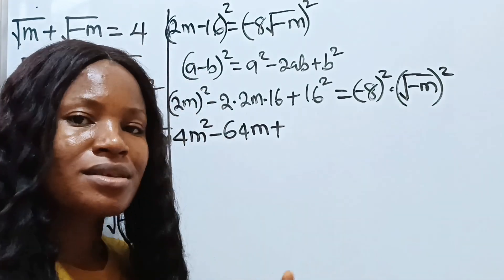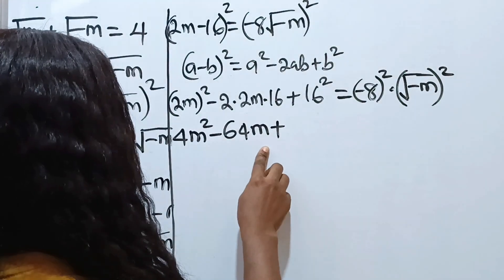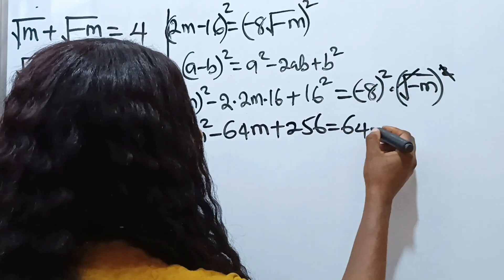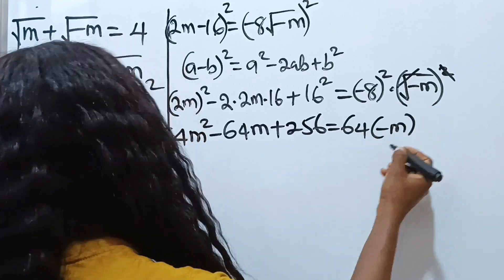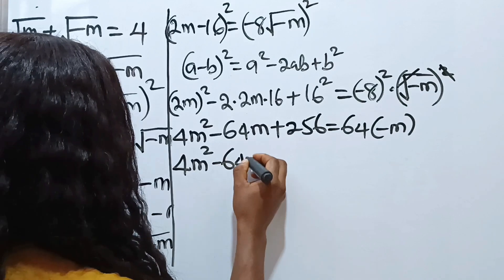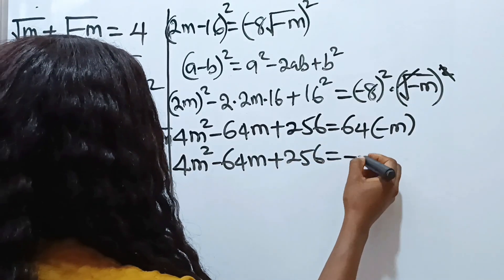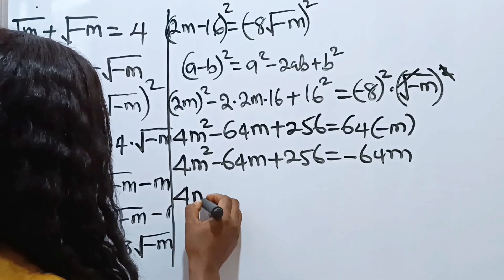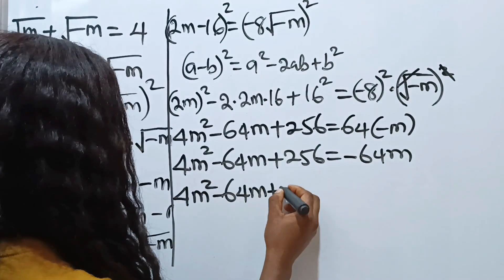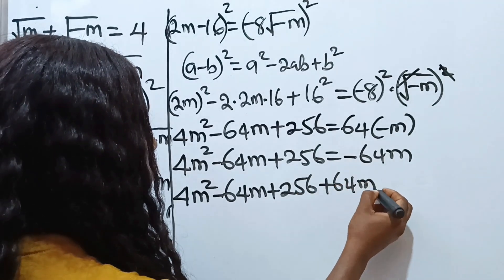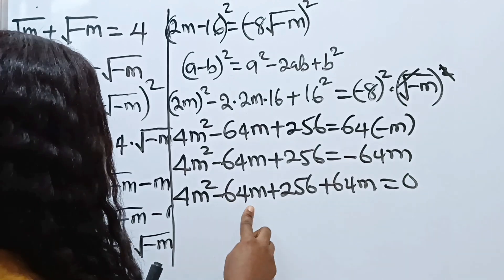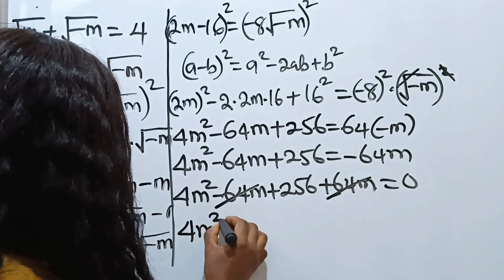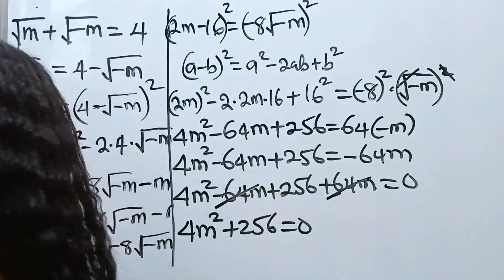So we have 4m squared minus 64m plus 256 equals negative 8 squared which is 64, times negative m, giving us negative 64m. Bringing this to the other side: 4m squared minus 64m plus 256 minus negative 64m plus 64m equals zero. Negative 64m plus 64m cancels to zero, so we are left with 4m squared plus 256 equals zero.